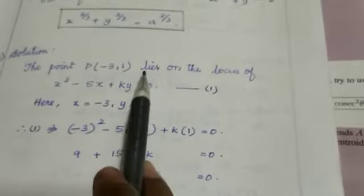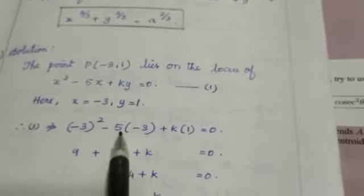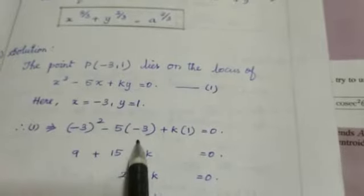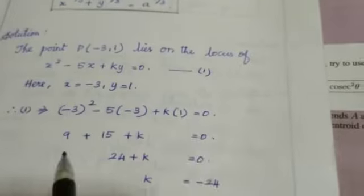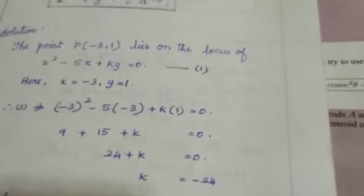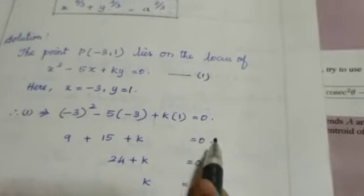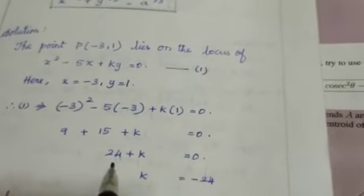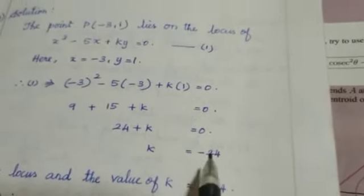Substitute these values in equation number 1. Minus 3 square minus 5 into value of x is minus 3 plus k into value of y is 1 equal to 0. Therefore 9 plus 15 plus k equal to 0. k equal to minus 24.